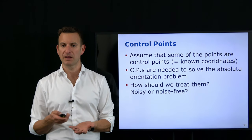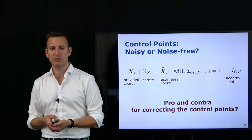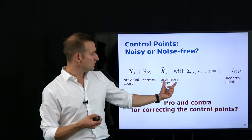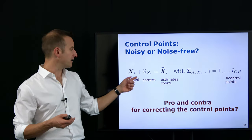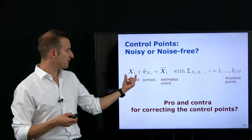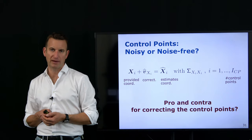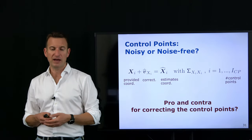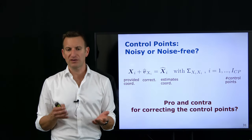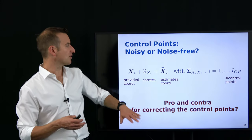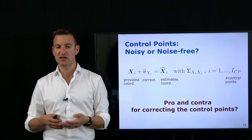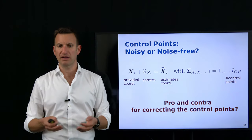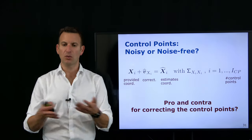In the least squares approach, one option is: my estimated coordinate should equal the provided coordinate plus some corrections, since the provided information may not have been perfectly correct. This correction vector may be small but non-zero. The alternative is to say the provided coordinate is the exact real coordinate, effectively removing the control point coordinates from my minimization problem. So should I treat control points as noisy or noise-free?